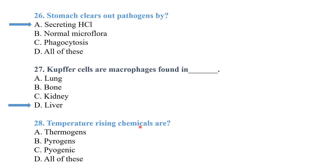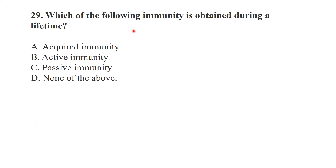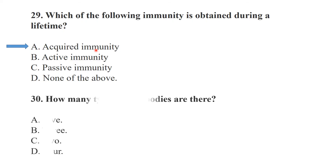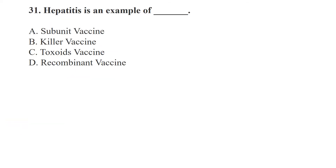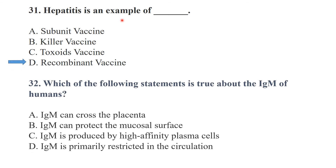Temperature-raising chemicals are called pyrogens. Acquired immunity is obtained during a lifetime. There are five types of antibodies. The hepatitis vaccine is an example of a recombinant vaccine.